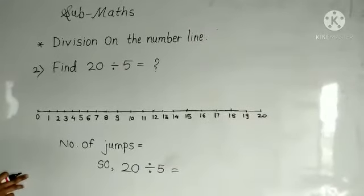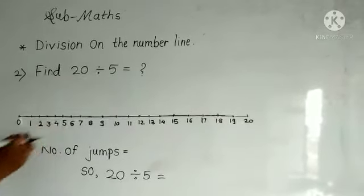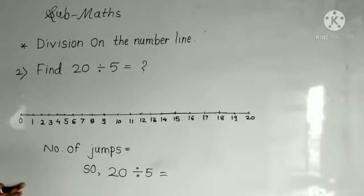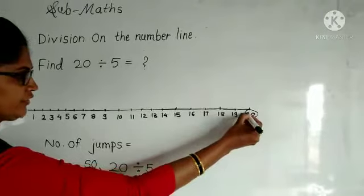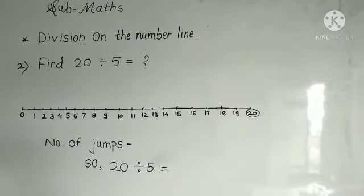Let's learn one more example. Find 20 divided by 5. First, let's draw the number line to 20. Now find the number 20. This is the number 20. Now we will count and jump 5 steps backwards.